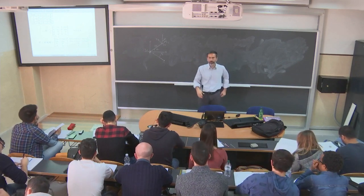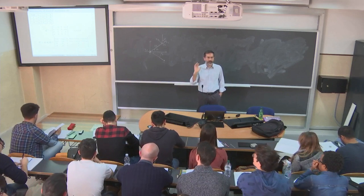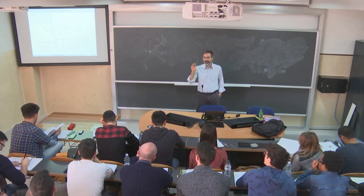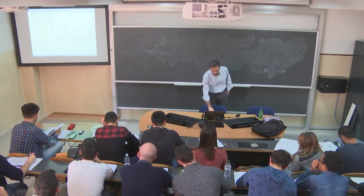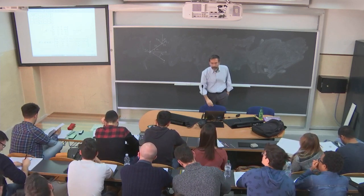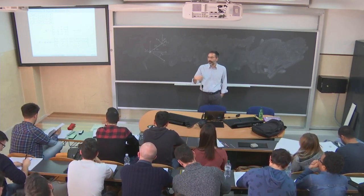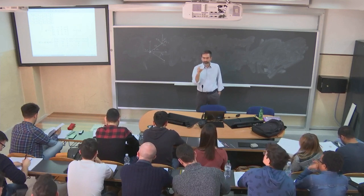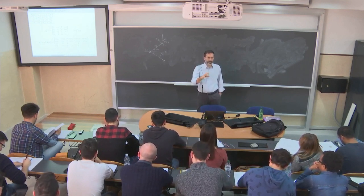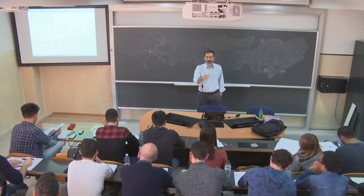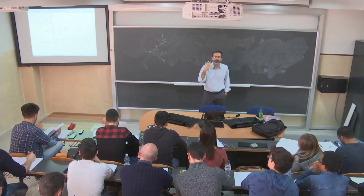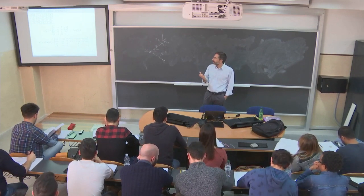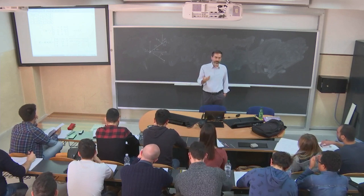The datasheet usually gives those numbers in millimeters. For us, when we write the code, always use the international system. A1, A2, and A3 are the lengths of the three links — constant. Alpha-1, Alpha-2, and Alpha-3 are all zero radians. D1, D2, D3 are all zero. Theta is the reading from the motor — the sensor mounted on the motor. This is actually the robot configuration.